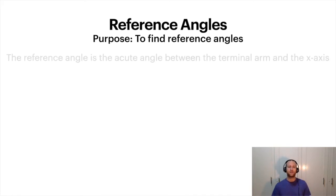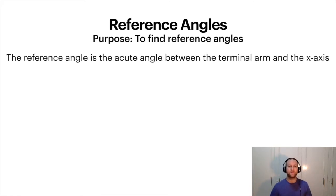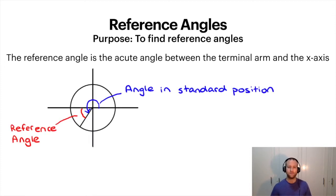Reference angles. Okay, these ones are very important. The reference angle is the acute angle—acute meaning less than 90 degrees—between the terminal arm and the x-axis, and in this case it could be either the positive or negative. So here in blue you see the angle in standard position, and in red your reference angle. Notice it's between the x-axis and the terminal arm. Note: reference angles are always positive. You're never going to have a negative one.